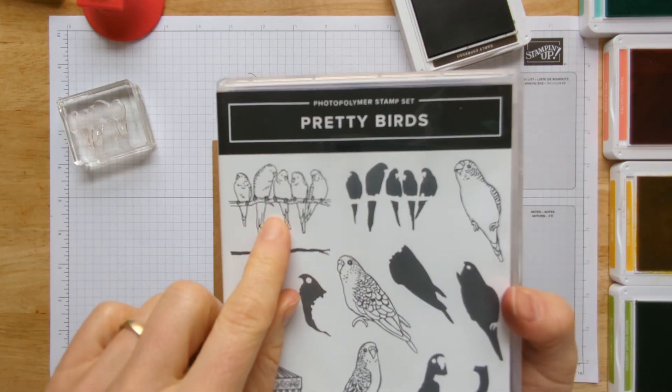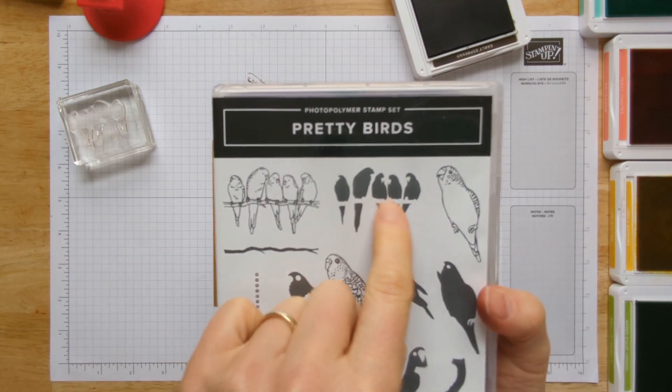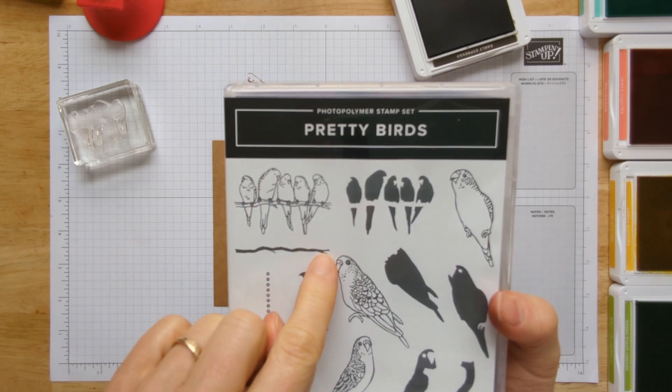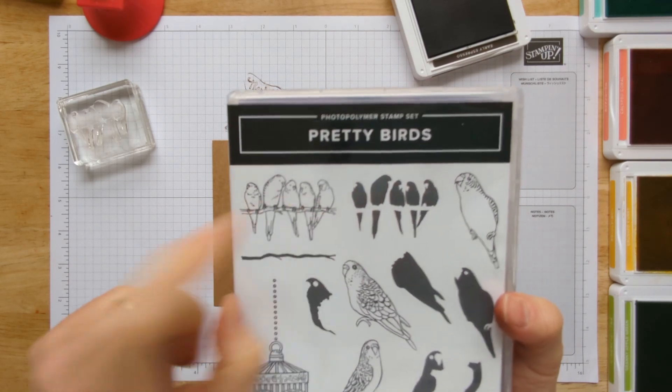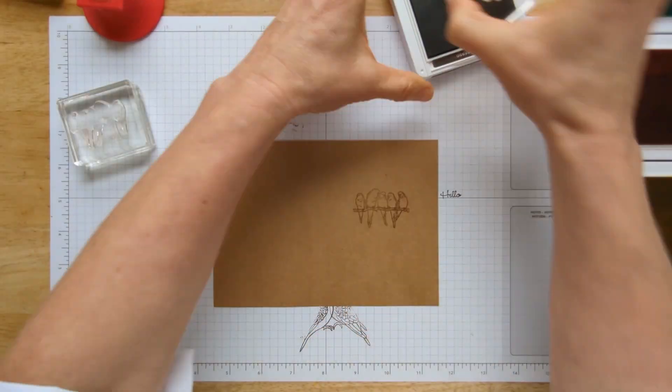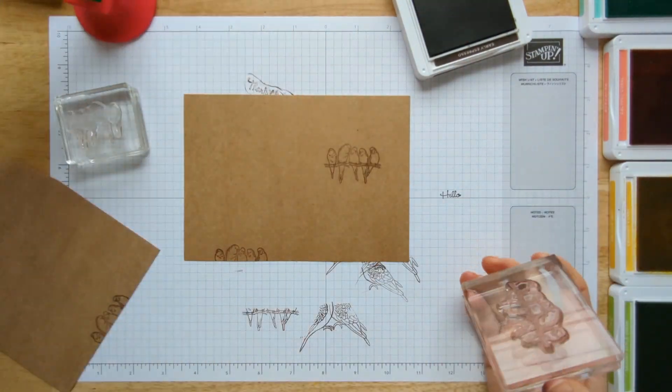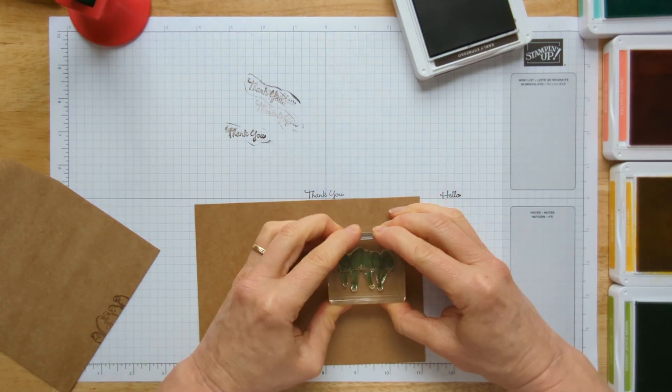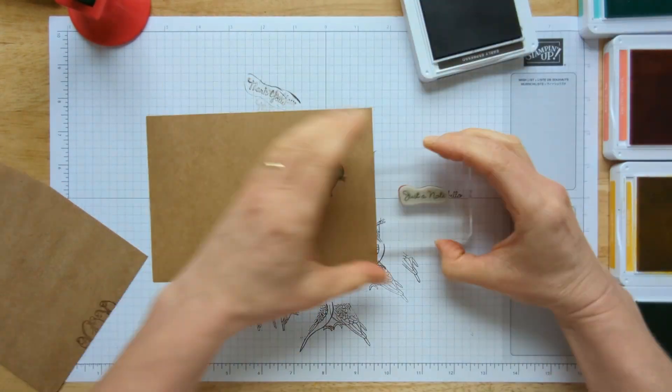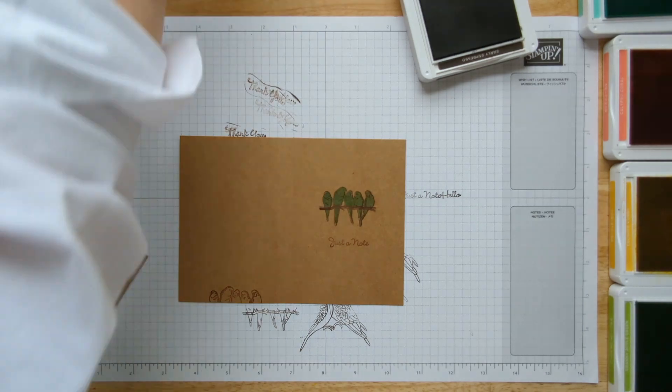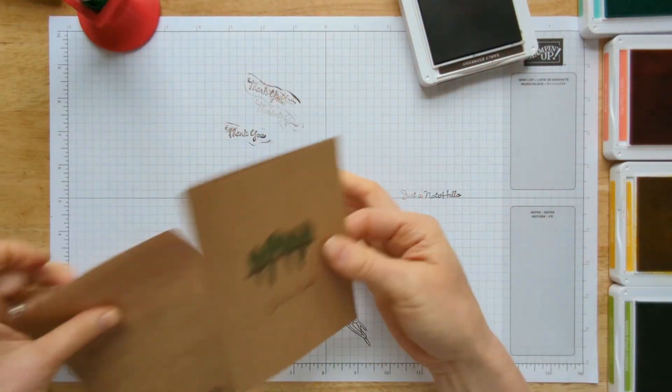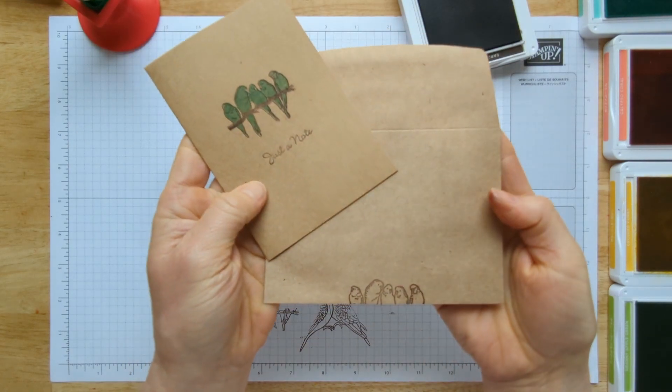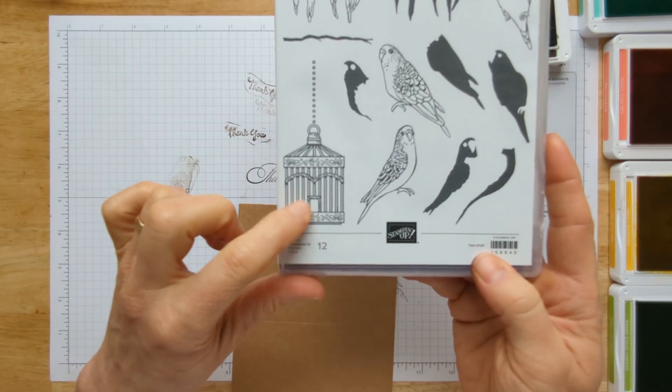This is my favorite stamp in the whole set. This will fill in the stamp and then you can add the tree branch right underneath them.